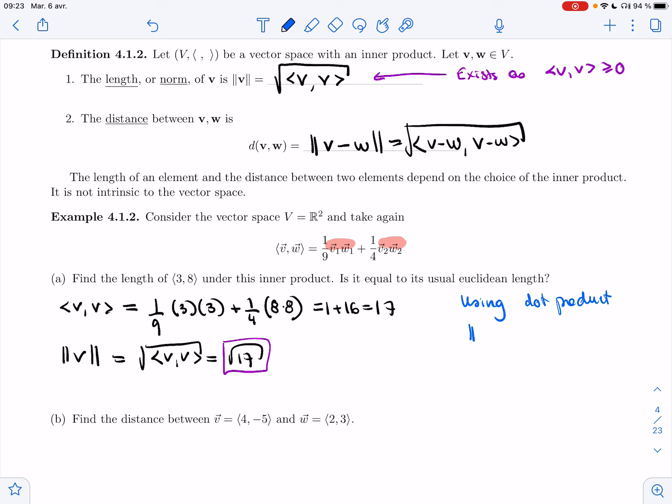I'm going to get the Euclidean length. In this case, the length of v will be square root of 3 squared plus 8 squared. So that's square root of 9 plus 64. That's square root of 73. So you can see it really depends on which inner product you use.